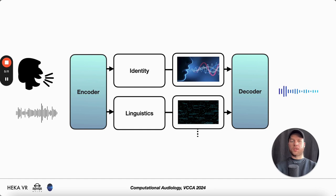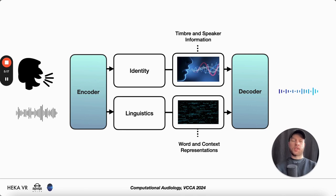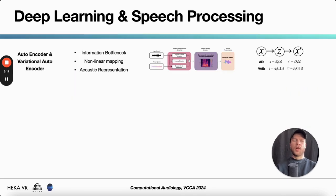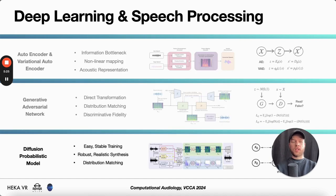One such behavior could be linguistics, which are word and context, but it could also be the identity, which represents timbre and speaker information. We've seen various approaches to do this, including autoencoders, generative adversarial networks, and diffusion models, but these networks are often very complex, they are slow, they are difficult to use, and they rarely work with customizable sampling rates.